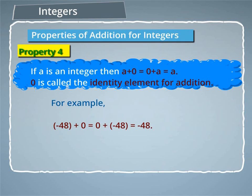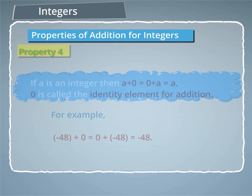For example, minus 48 plus 0 is equal to 0 plus minus 48 is equal to minus 48.